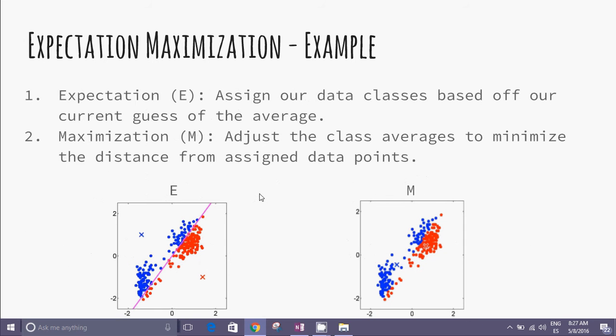By example: In the expectation step shown in the first graphic, we assign our data classes based on our current estimate of the average. We have two centroids here and here, marked by crosses.